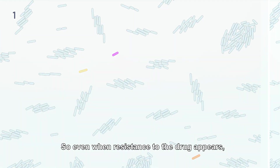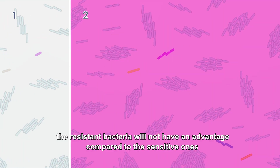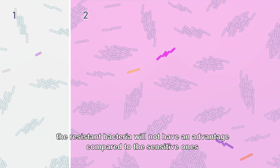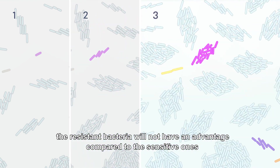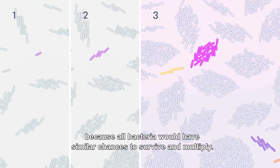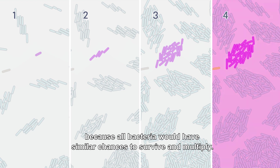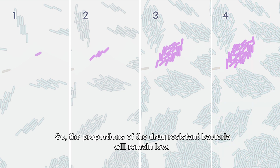So even when resistance to the drug appears, the resistant bacteria will not have an advantage compared to the sensitive ones, because all bacteria would have similar chances to survive and multiply. So the proportions of the drug-resistant bacteria will remain low.